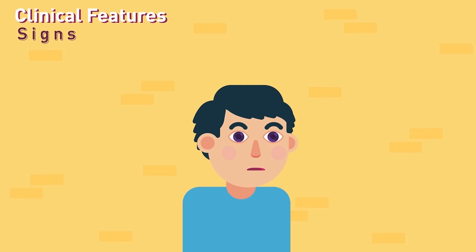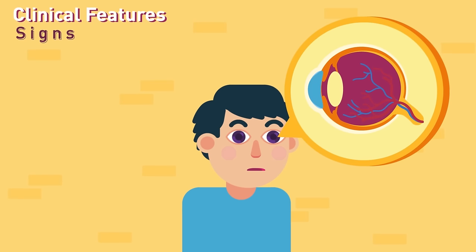Signs. Prominent eyeball, as the eye is big. Retinal changes, seen in pathological myopia.